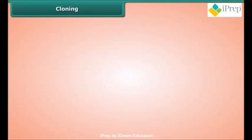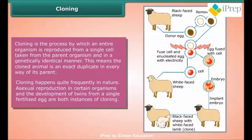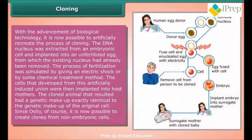Cloning: Cloning is the process by which an entire organism is reproduced from a single cell taken from the parent organism in a genetically identical manner. The cloned animal is an exact duplicate of its parent. Cloning happens quite frequently in nature — asexual reproduction in certain organisms and the development of twins from a single fertilized egg are both instances of cloning. With advances in biological technology, it is now possible to artificially recreate the cloning process.